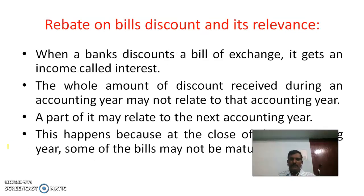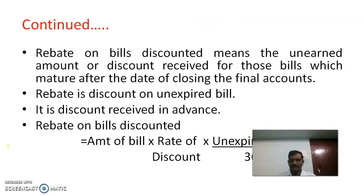Another important topic for this session is Rebate on Bills Discounted and its relevance. When a bank discounts a bill of exchange, it gets an income called interest or discount. The whole amount of discount received during an accounting year may not relate to that accounting year — a part of it may relate to the next accounting year. This happens because at the close of the accounting year, some bills may not have matured. Rebate on bills discounted means the unearned amount of discount received for those bills which mature after the date of closing the final accounts.